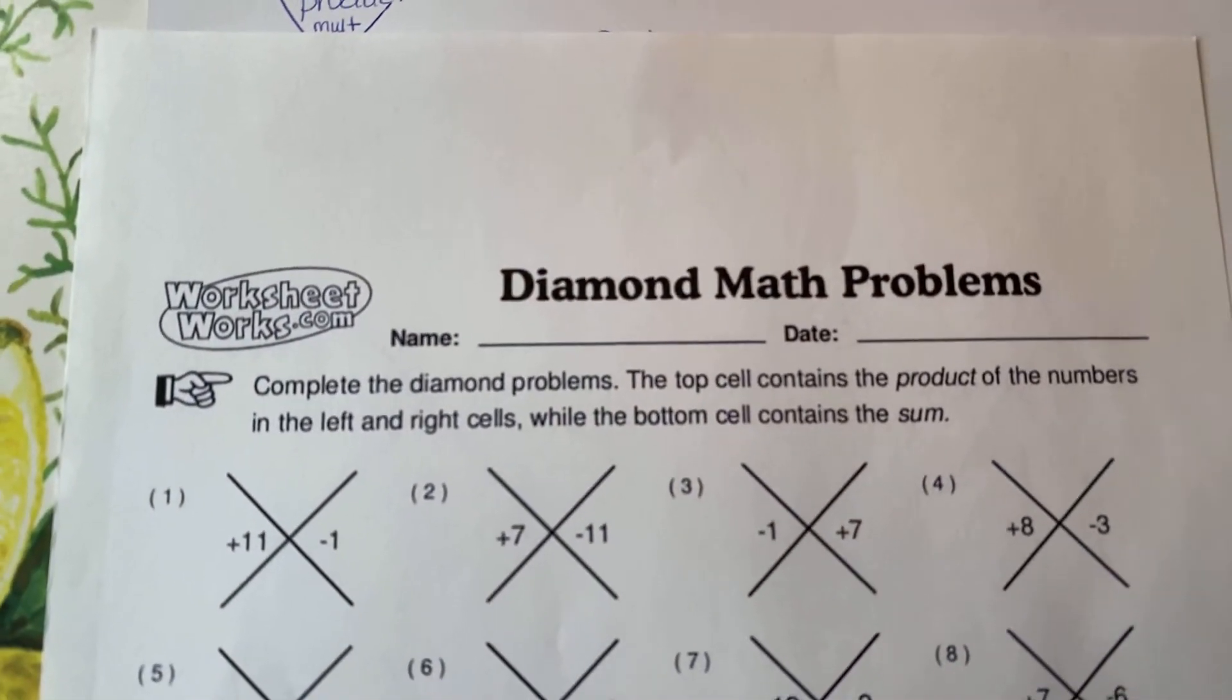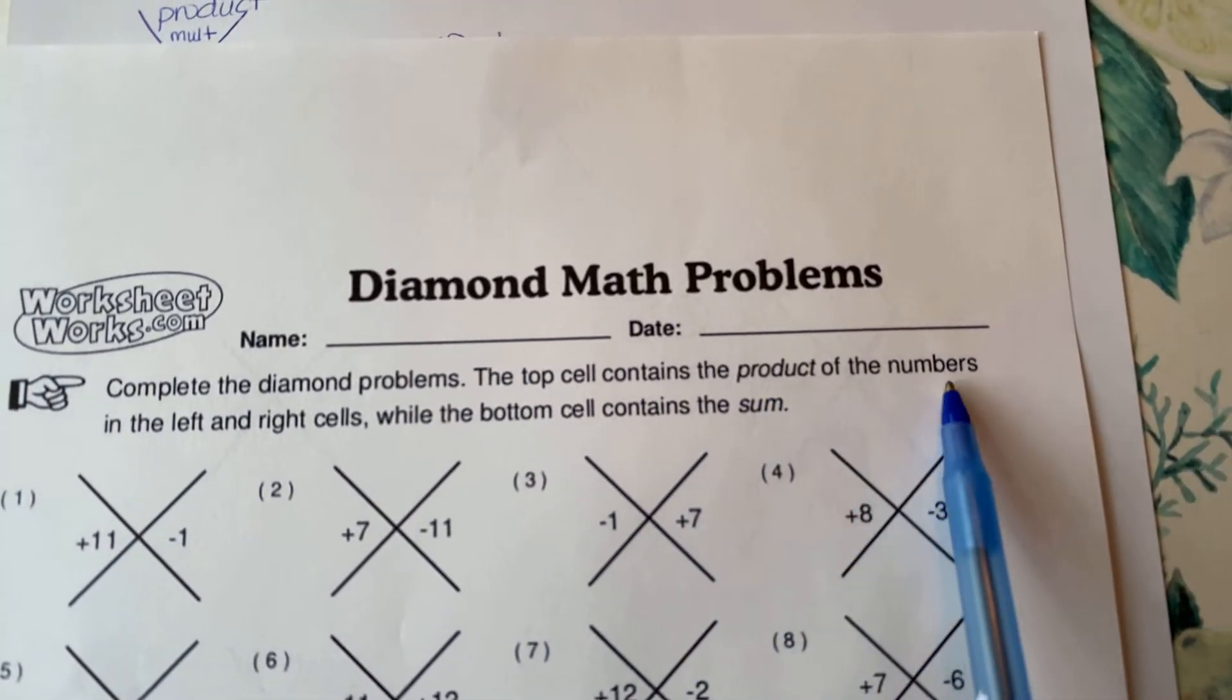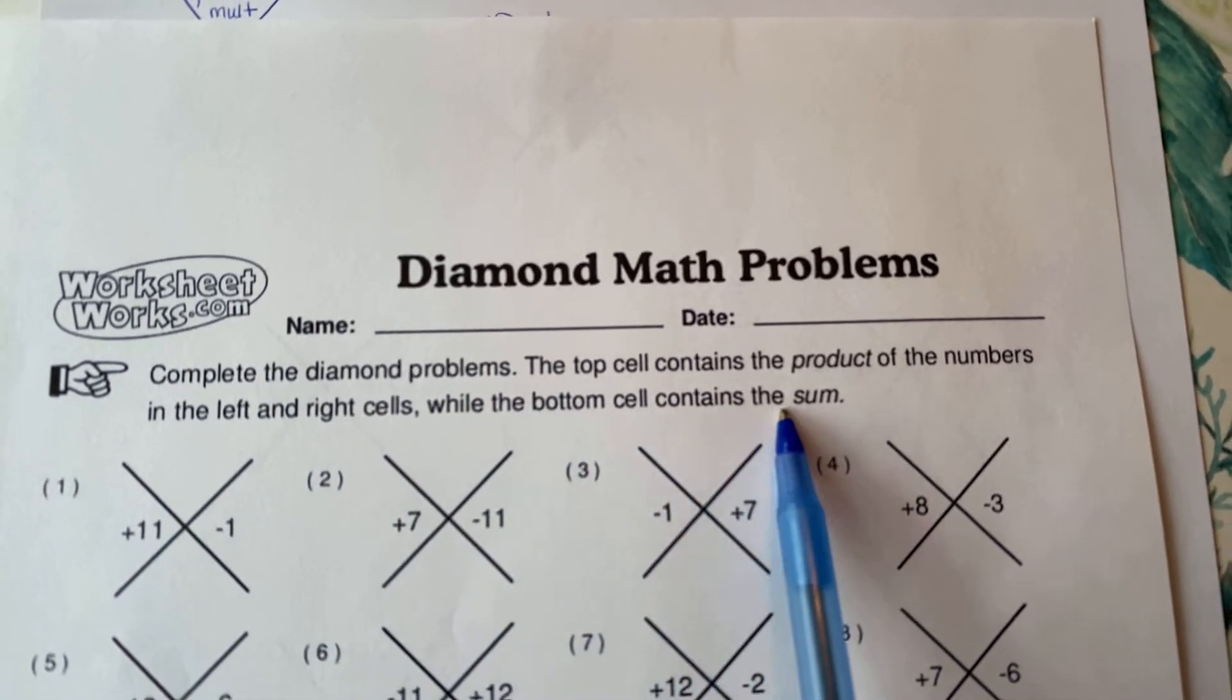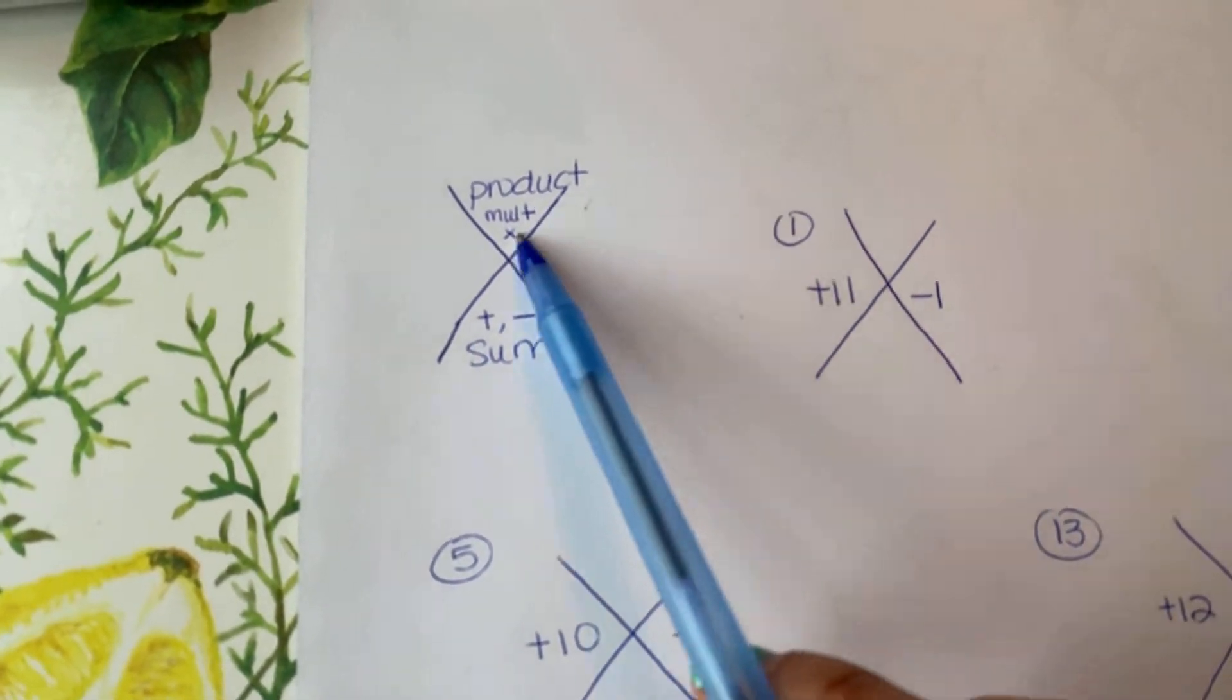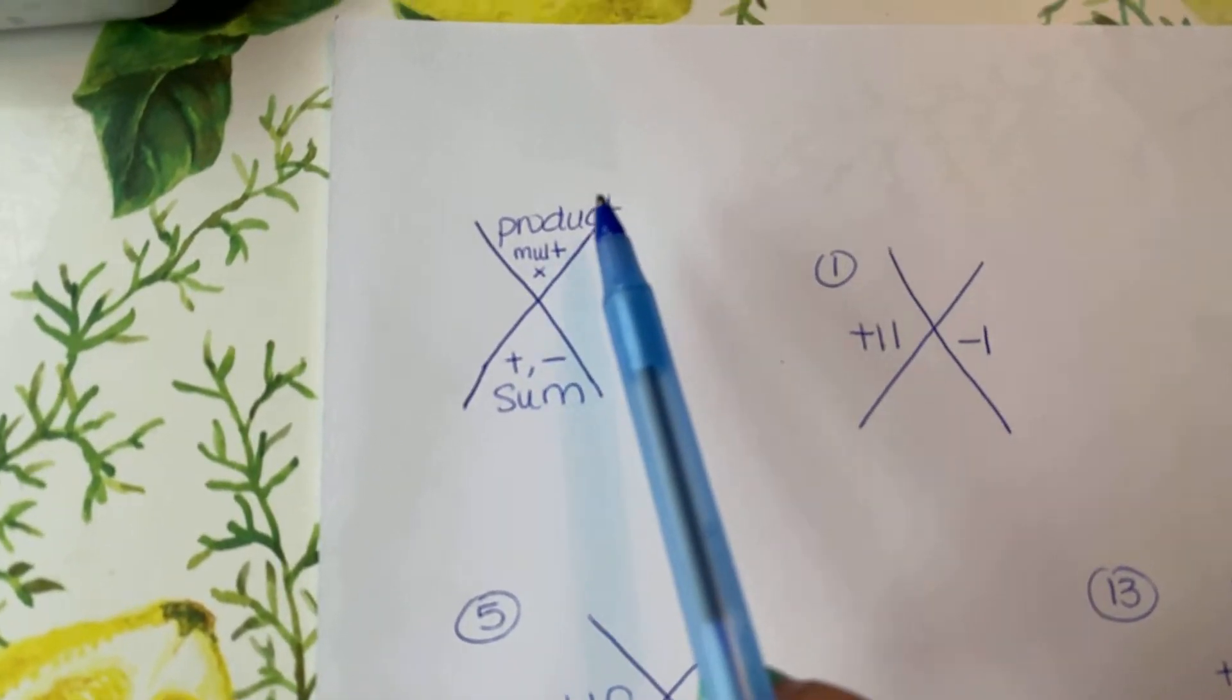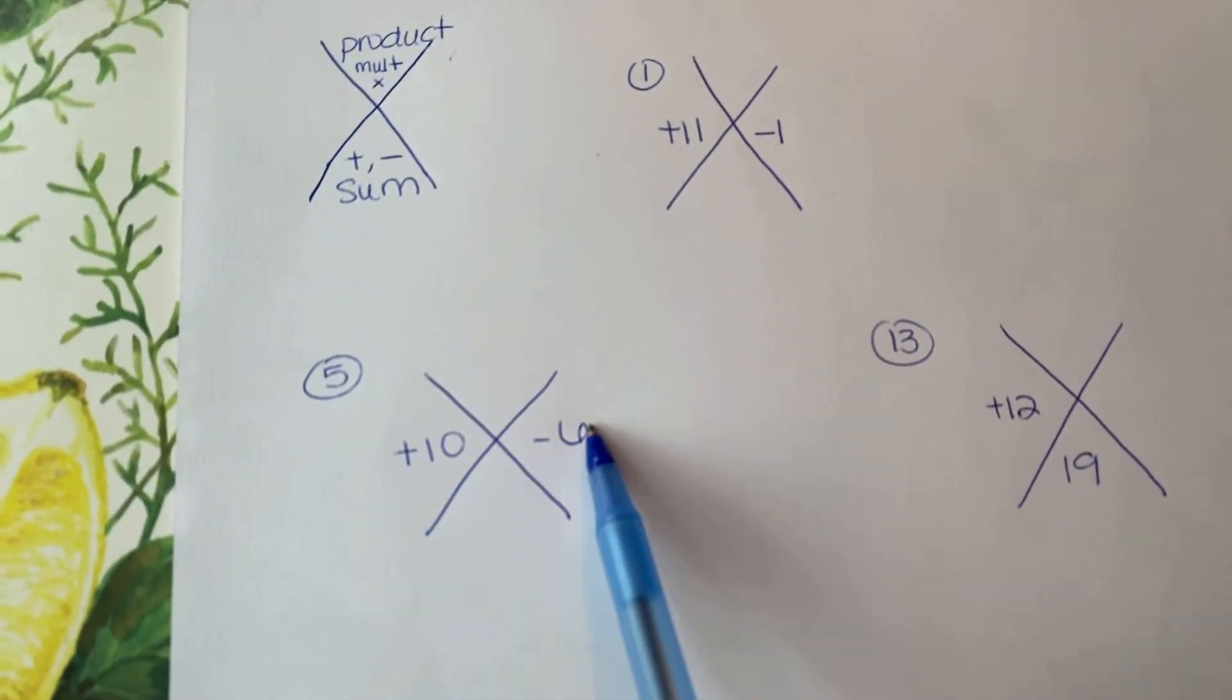Let's read the directions. It says complete the diamond problems or the diamond method. The top cell contains the product of the numbers in the left and right cells, while the bottom cell contains the sum. So what does that mean? You have this diamond or X, right?